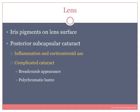What are the changes in the lens? Iris pigments can be seen on the lens surface, meaning they had temporarily adhered to the lens. The pigments can remain on the lens, and these are telltale evidence of old iridocyclitis.